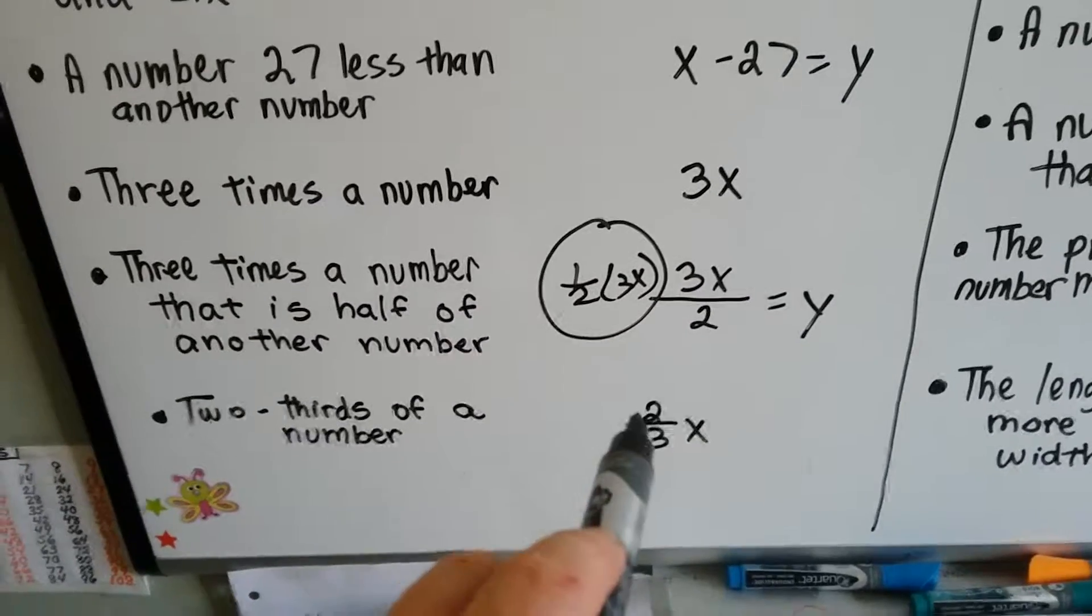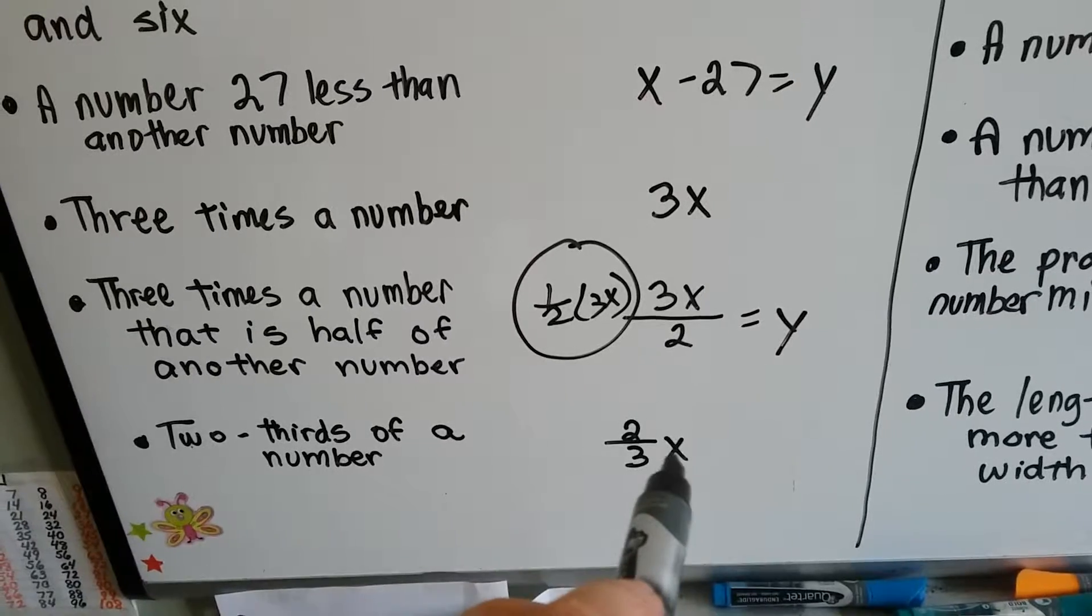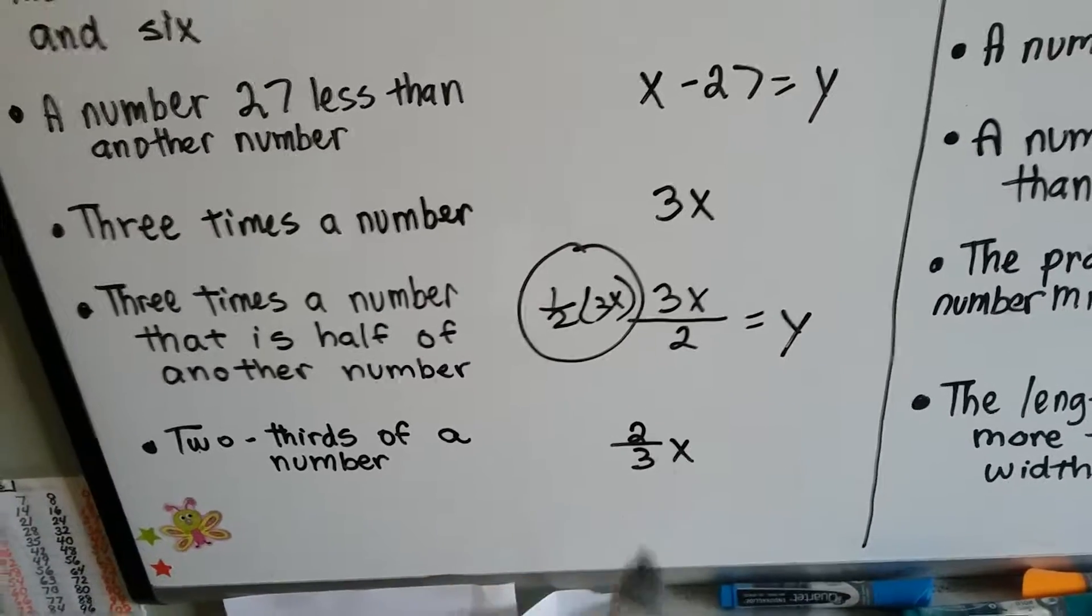2 thirds of a number is 2 thirds x. 2 thirds times a number.